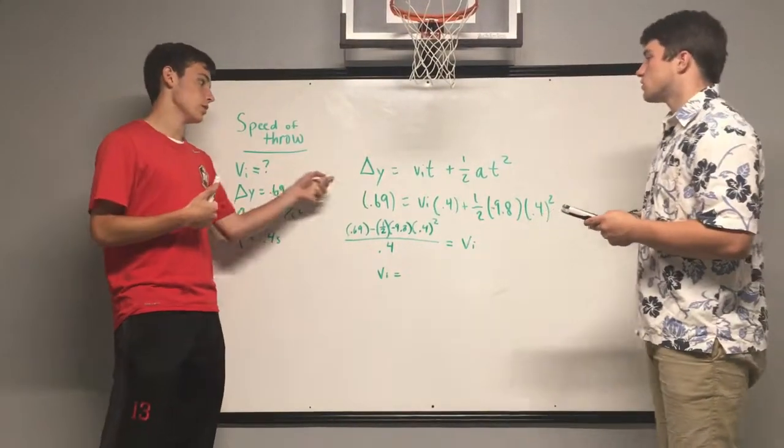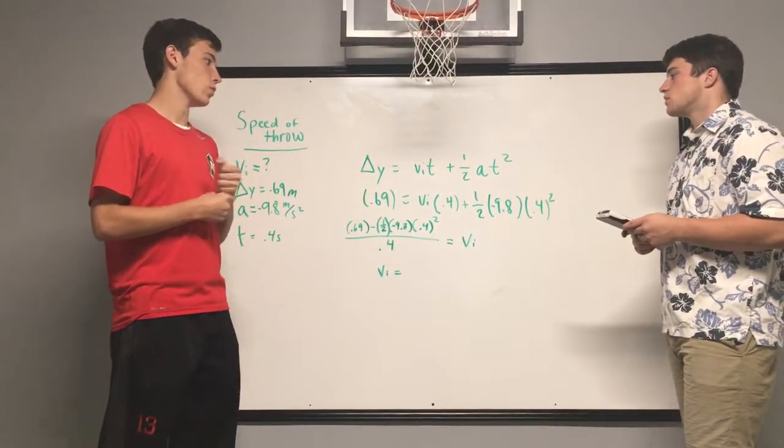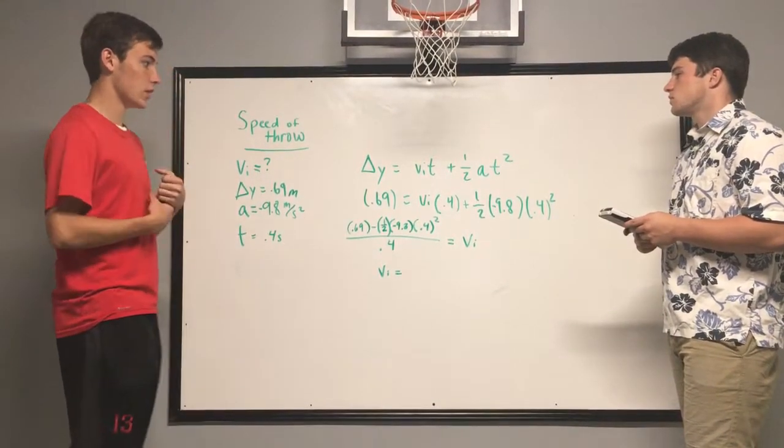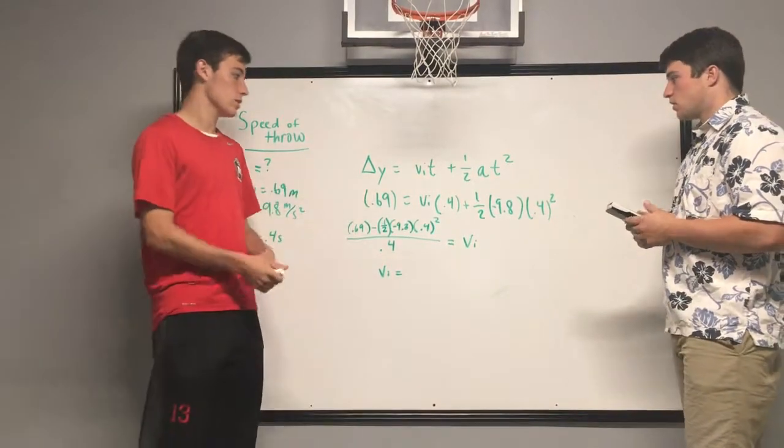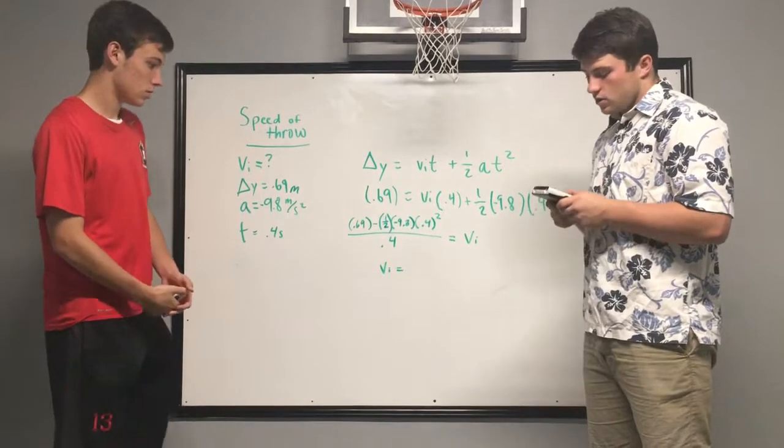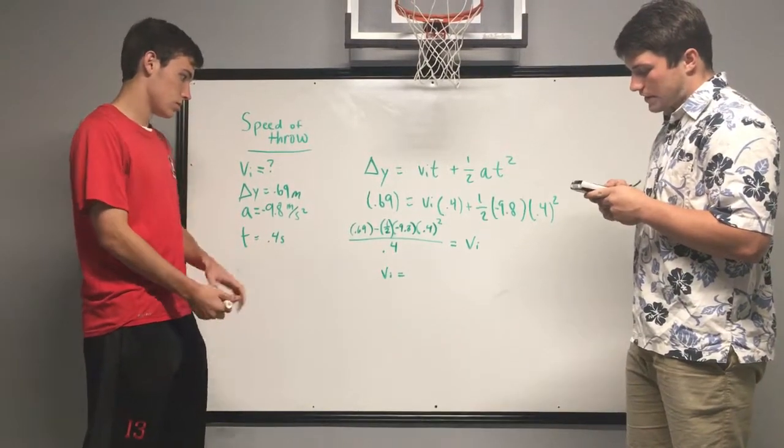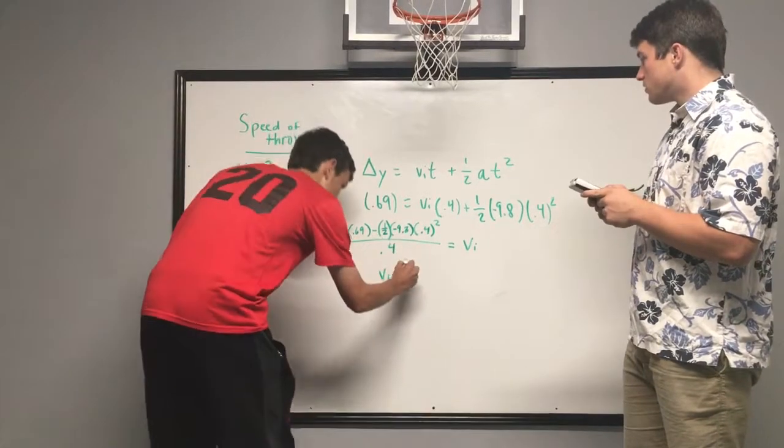We used the equation delta y equals v i t plus 1.5 a t squared to solve for vi. And when you plug everything in and isolate for vi, you get your initial velocity at 3.69 meters per second.